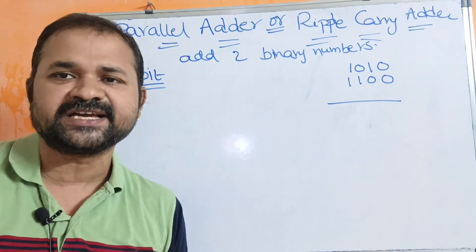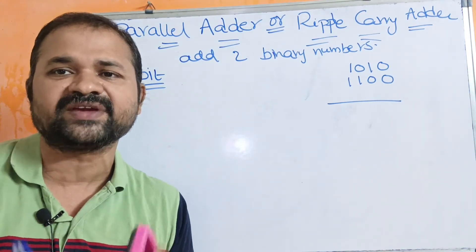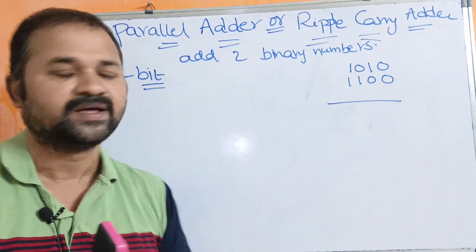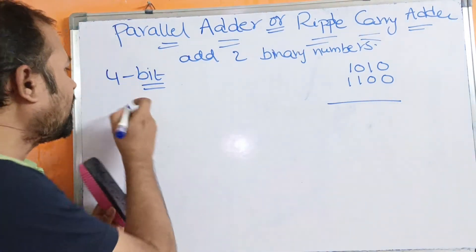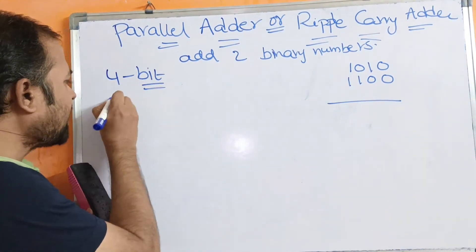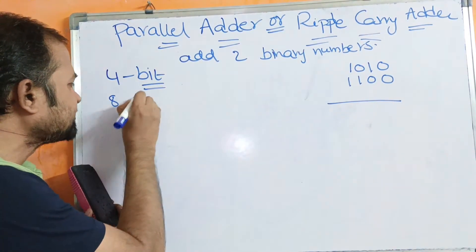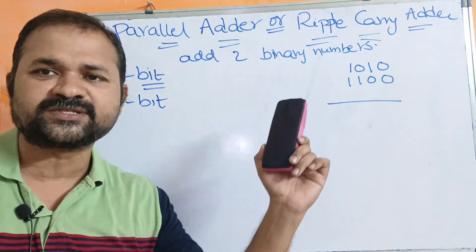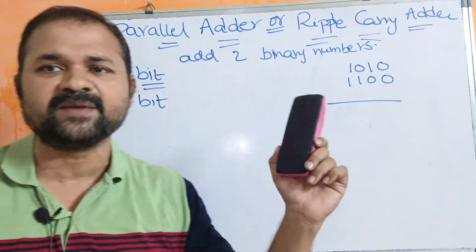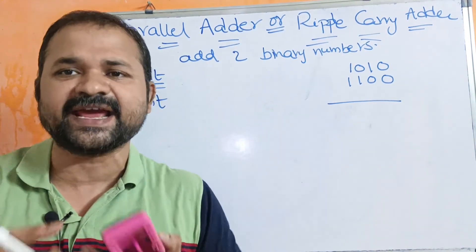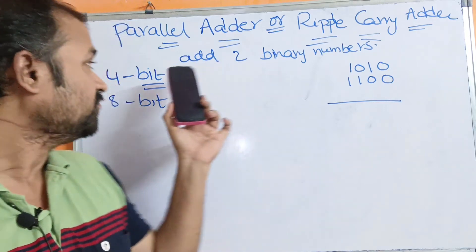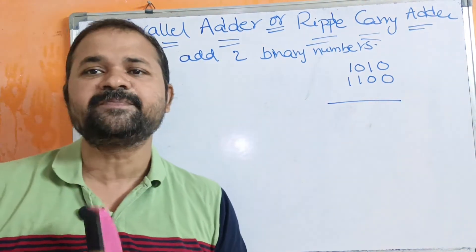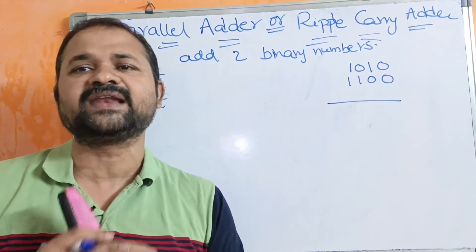Suppose we have 8 bits present in the binary number, then we can call the parallel adder an 8-bit parallel adder. And if the binary number contains n bits, then we call it an n-bit parallel adder.